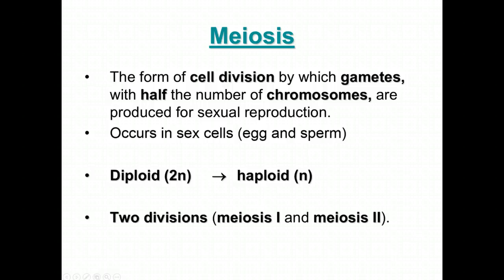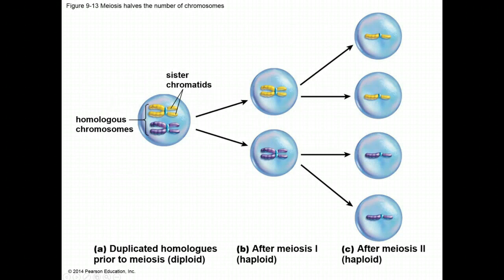Meiosis occurs with sex cells to produce egg and sperm. With meiosis, the chromosome number, which is diploid, is reduced to haploid. This is done by two divisions: meiosis 1 and meiosis 2.